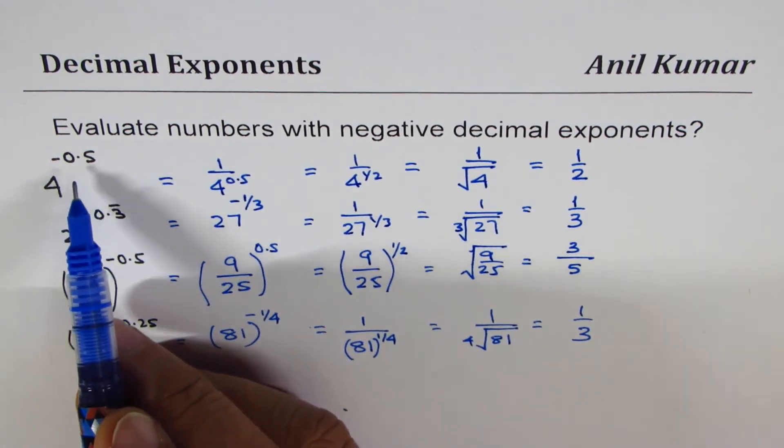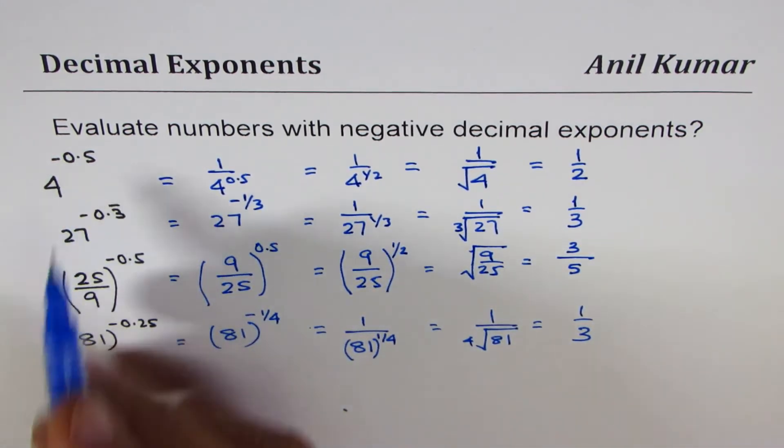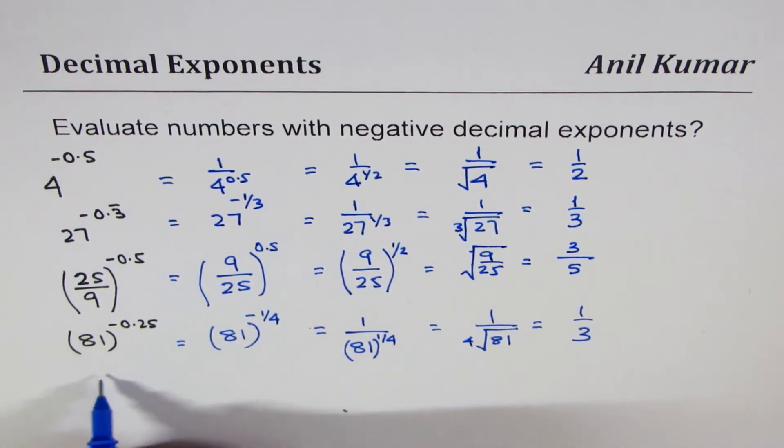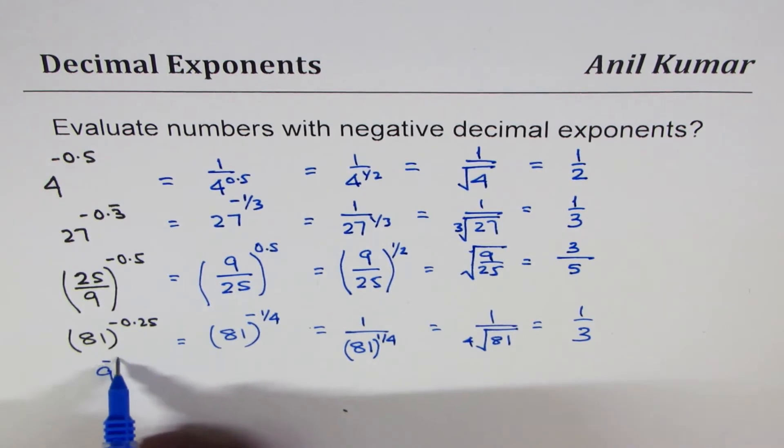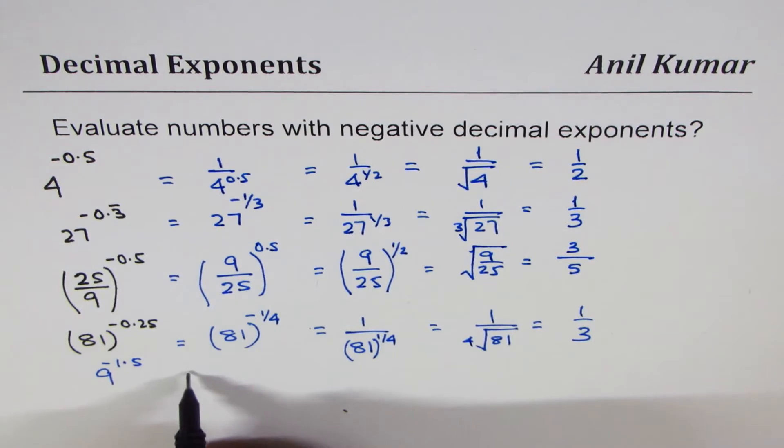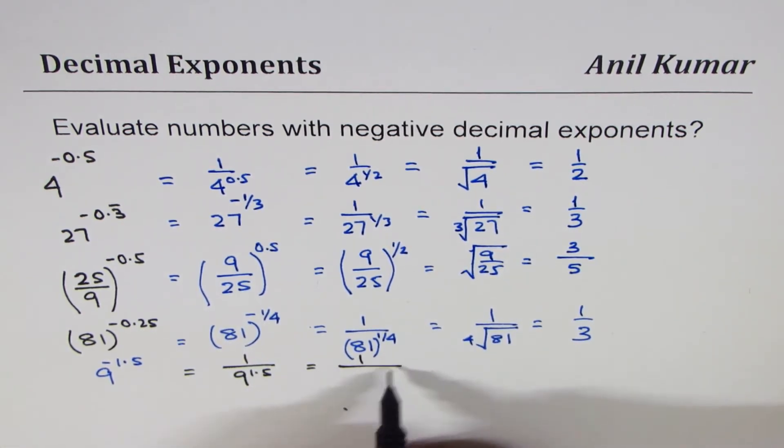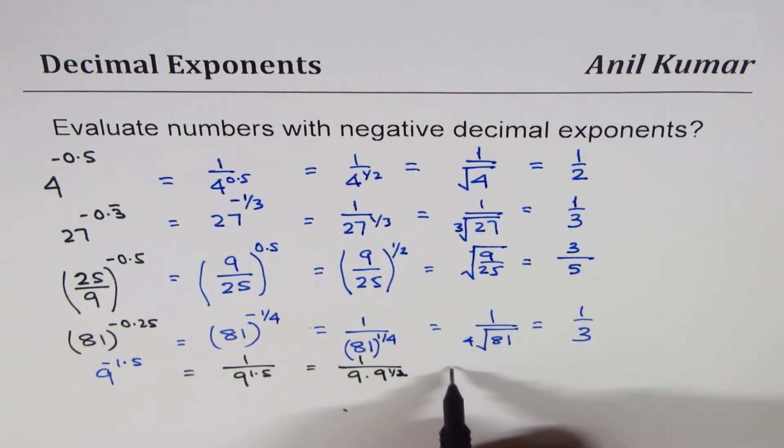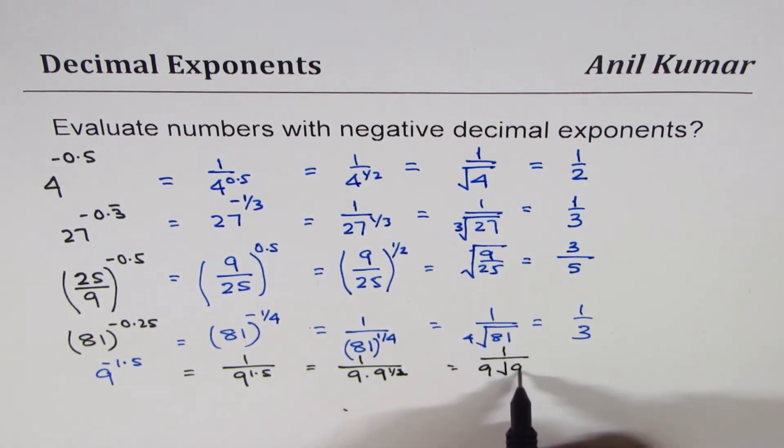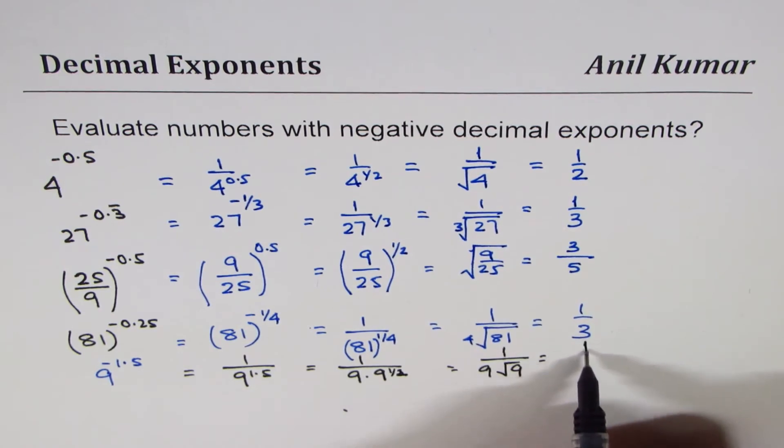Now these powers could actually be more than 1 also. So we could have, for example, 9 to the power of minus 1.5. So 9 to the power of minus 1.5 means you could write 1 over 9 to the power of 1.5, which is 1 over 9 times 9 to the power of half. And that is 1 over 9 times square root of 9, and that gives you 1 over 27. 9 times 3.